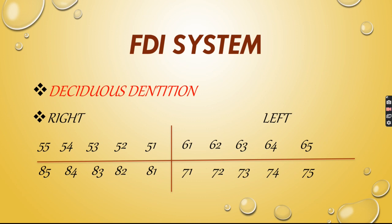The first digit indicates the quadrant — five through eight — and the second digit indicates the tooth position. So tooth 51 means quadrant 5, tooth position 1. The maxillary right quadrant runs 51 to 55, the left maxillary quadrant is 61 to 65, the left mandibular quadrant is 71 to 75, and the right mandibular quadrant is 81 to 85.